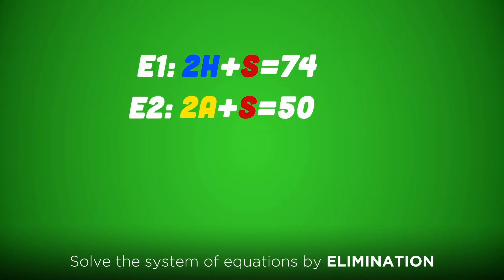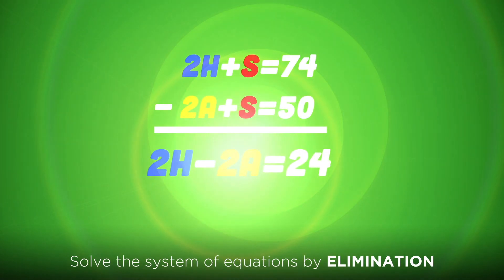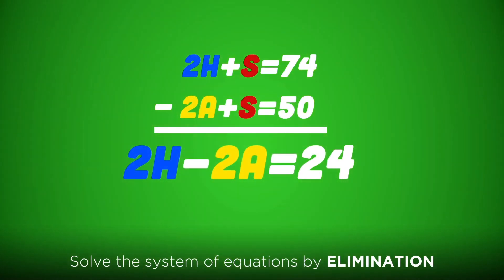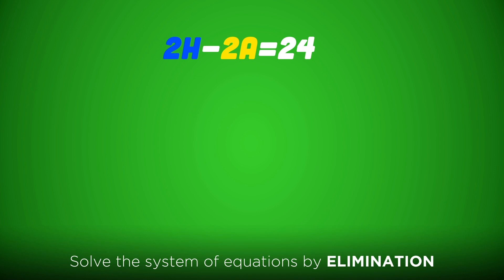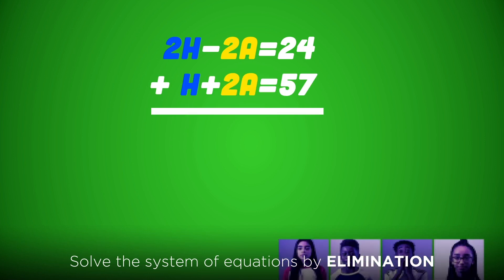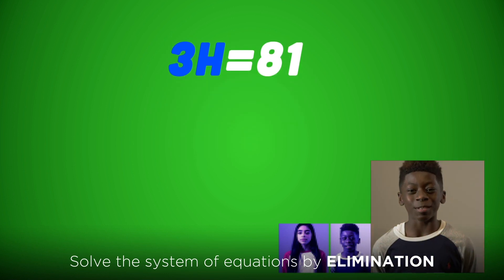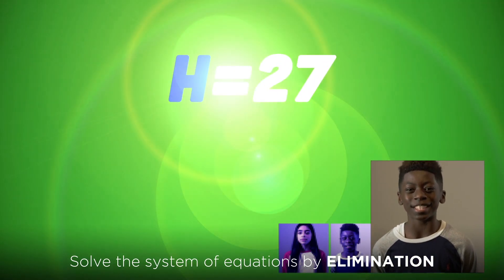We see that the first and second equations have the like terms of S. So we can subtract S minus S to eliminate them, leaving us with 2H - 2A = 24. I see opposites. Now we can add 2H - 2A = 24 plus H + 2A = 57. We know that 3H = 81. Then we will divide three by both sides to get H = 27.